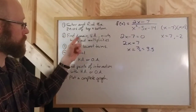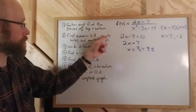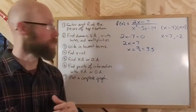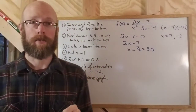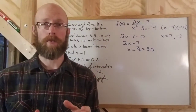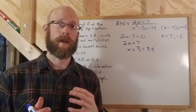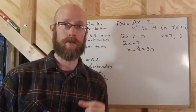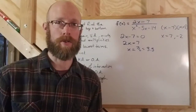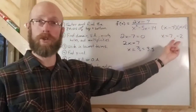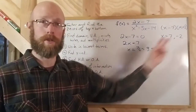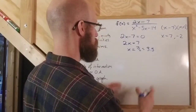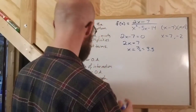Step two says define the domain, vertical asymptotes, x-intercepts, holes, and multiplicities. The domain is basically all real numbers except where the denominator is zero, so you've got to pull out the zeros for the denominator. We have two such numbers. Let me organize this: the zeros of the top are just 3.5, and the zeros of the bottom are 7 and negative 2.